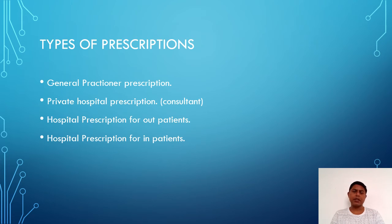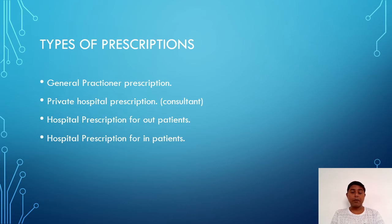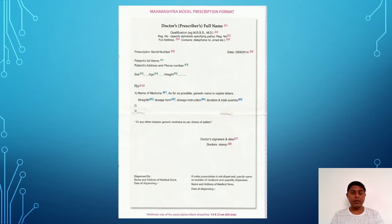There are different types of prescriptions: general practitioner prescriptions, private hospital prescriptions for consultations, hospital prescriptions for outpatients, and hospital prescriptions for inpatients. This is a typical example of a prescription designed by the Maharashtra State Pharmacy Council, which provides a standard format.